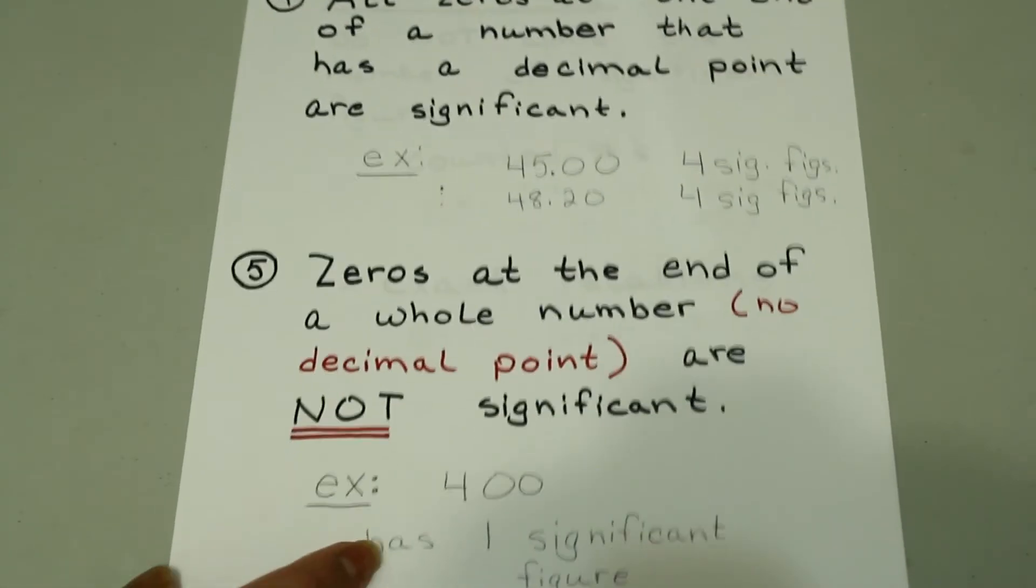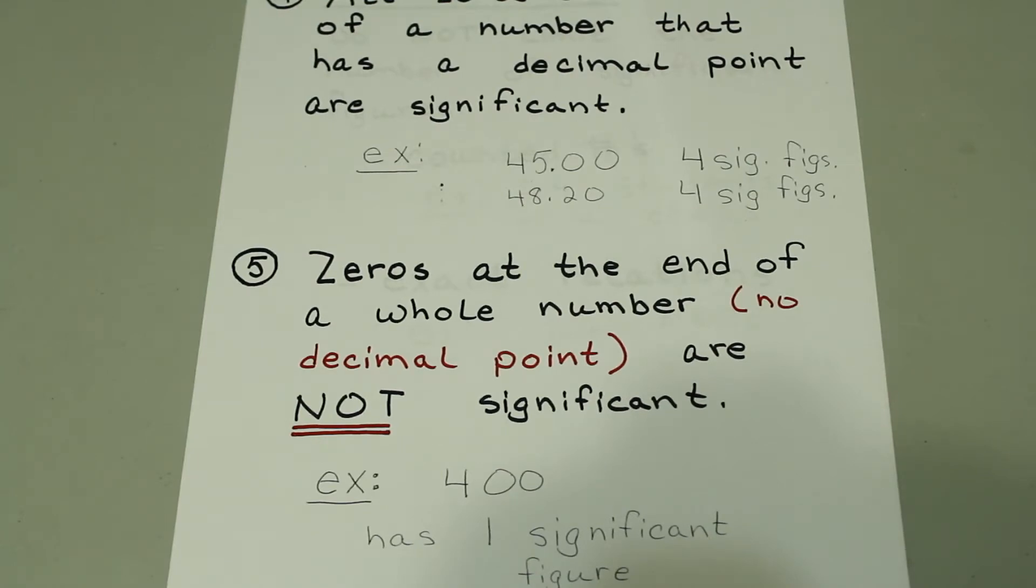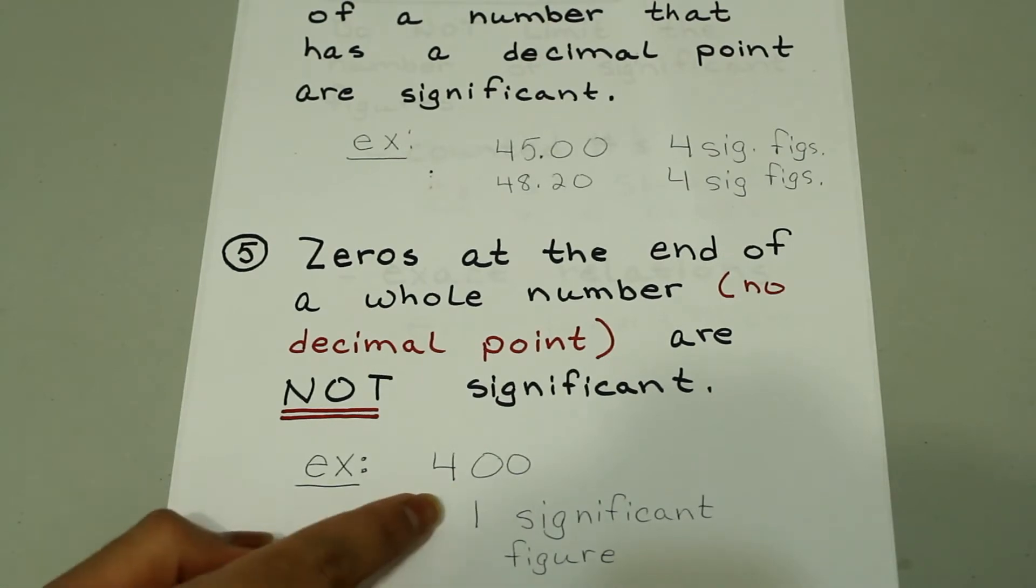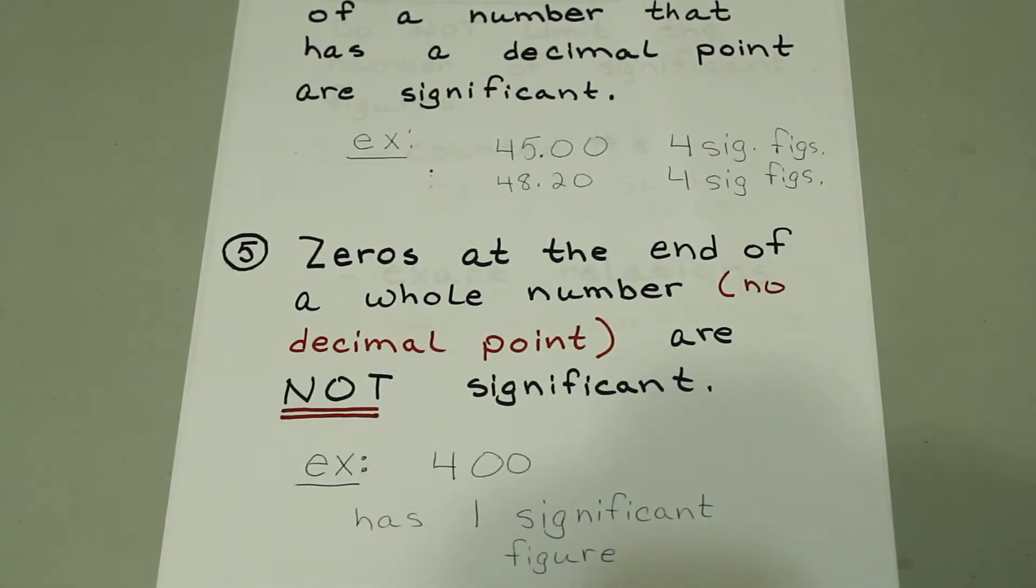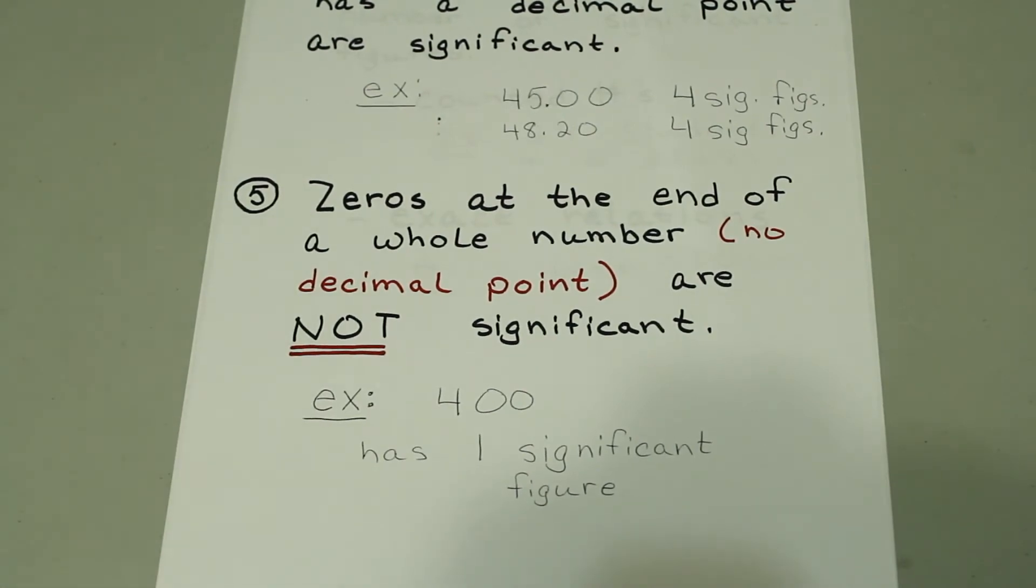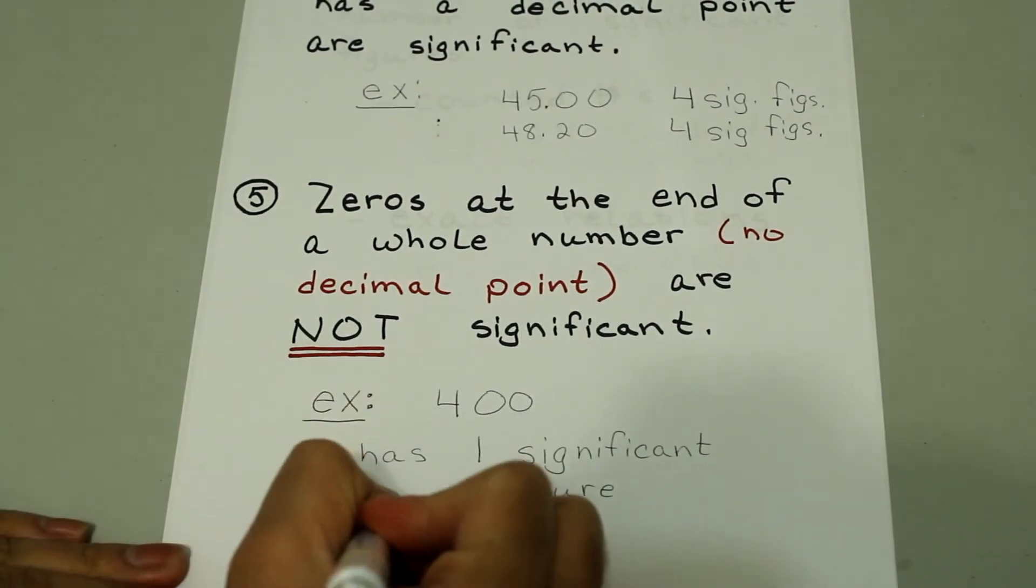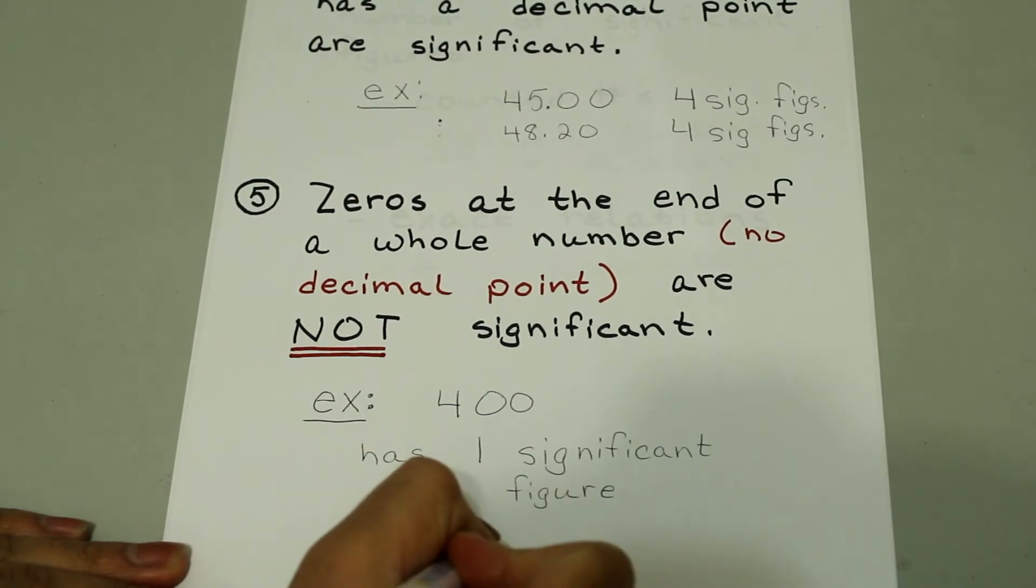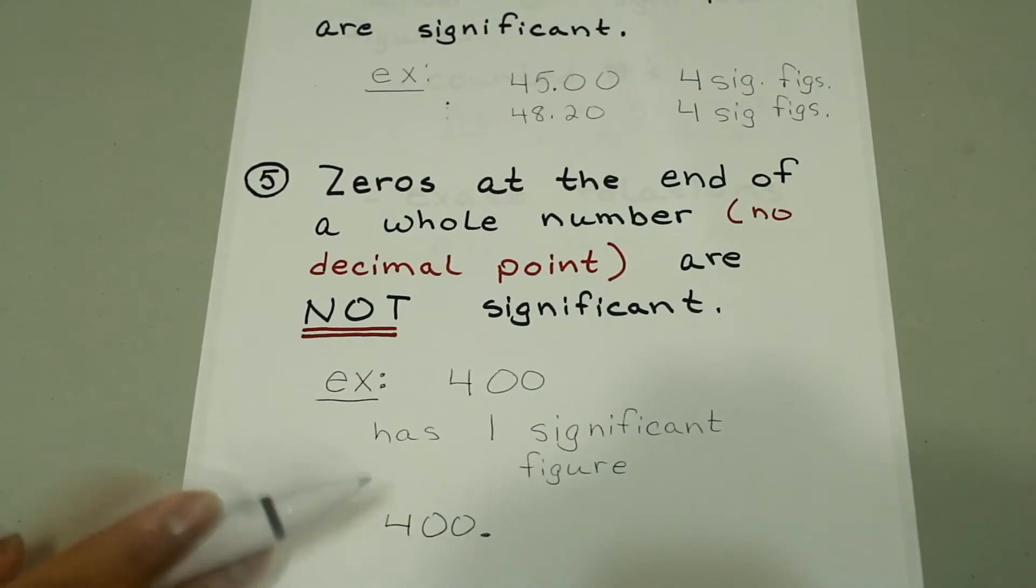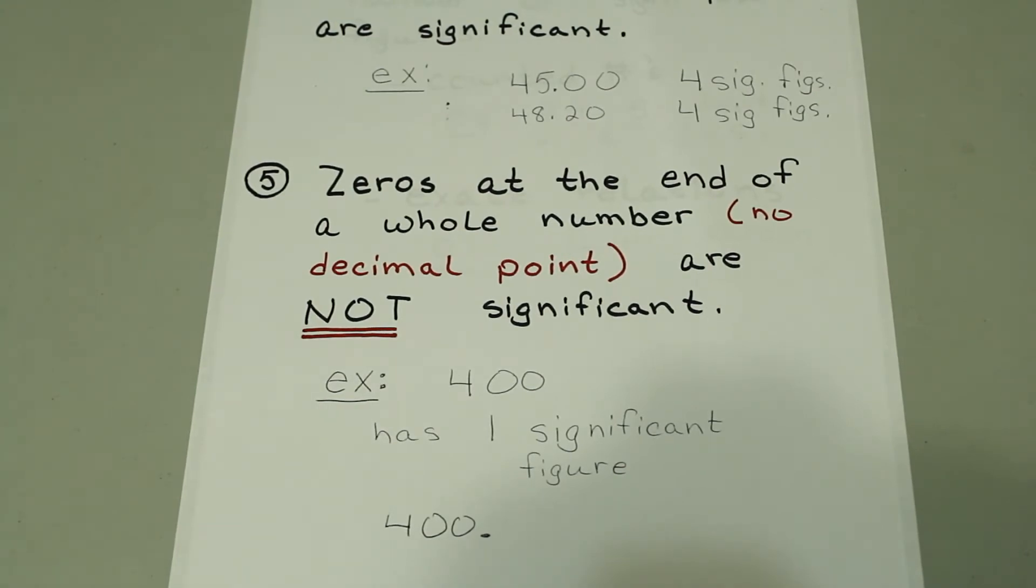The zeros at the end of a whole number without a decimal point are not significant. So 400 has only one significant figure. That would be the four. However, if it was 400 and there was a decimal point at the end, now we would have had three significant figures. To avoid confusions like this, we generally use scientific notation, but we'll take care of that in a separate video.